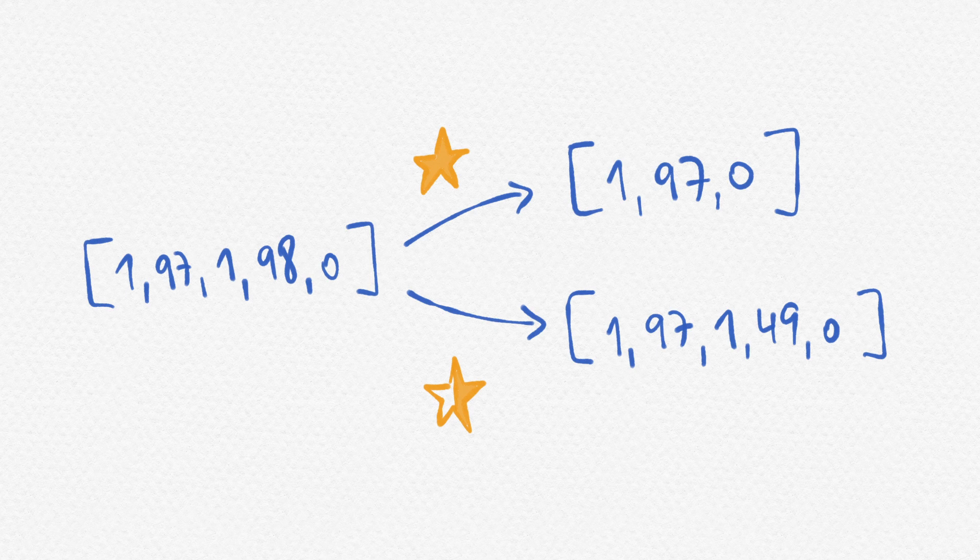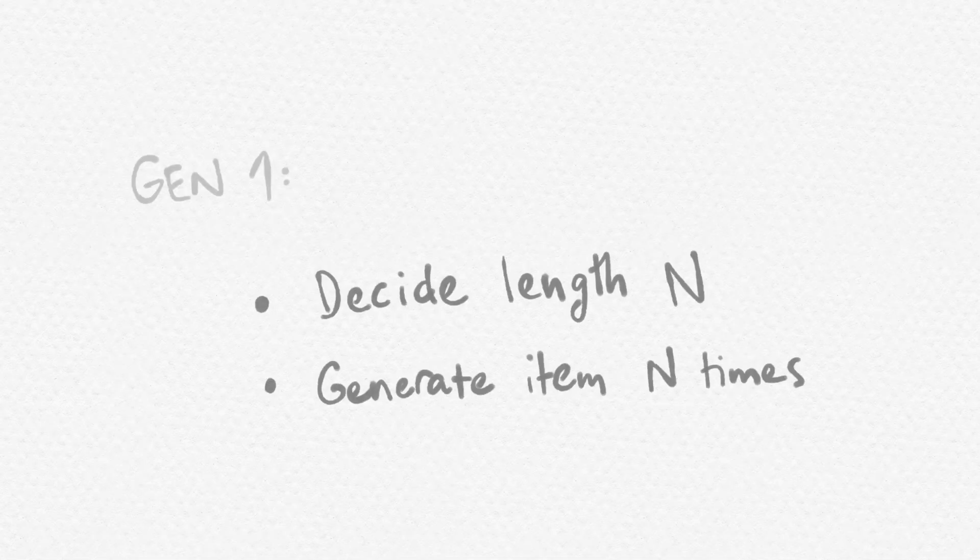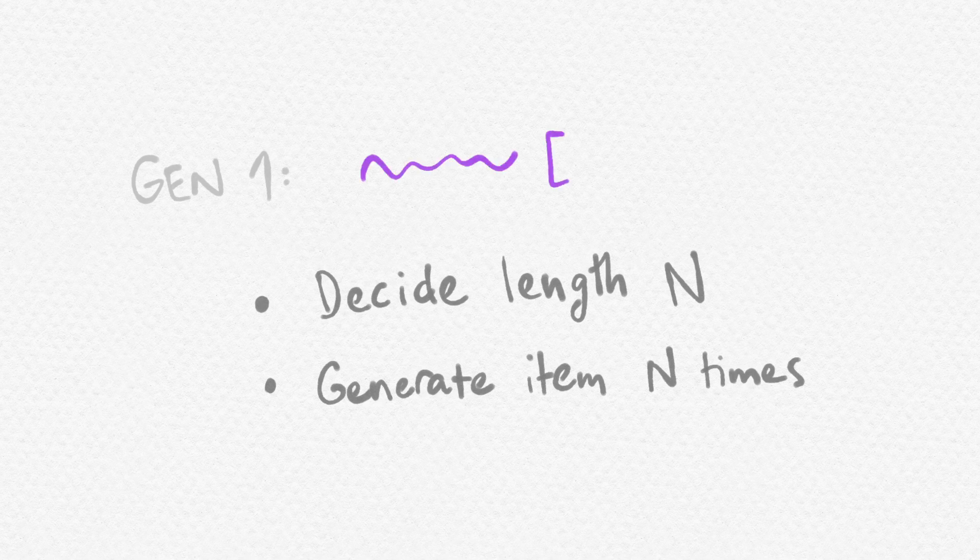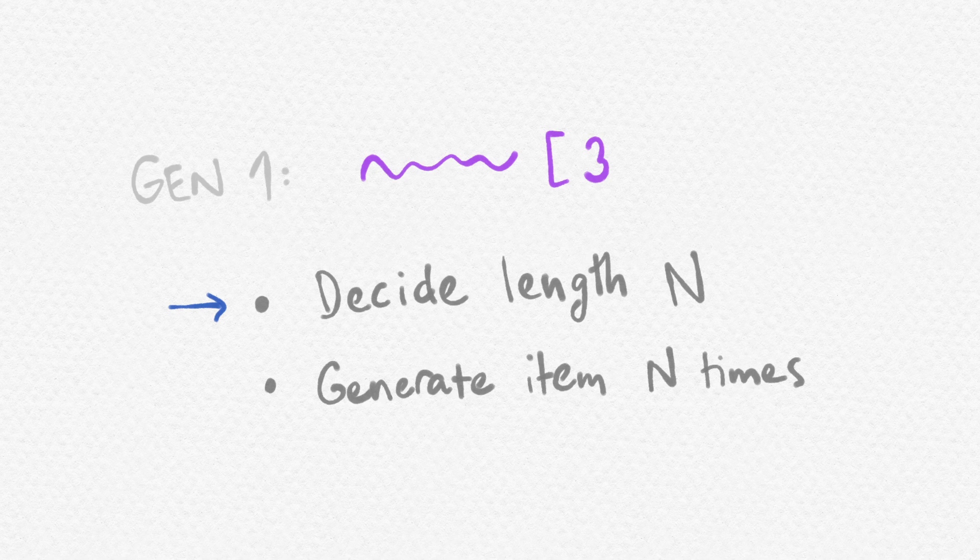This means though that the shrinking process is sensitive to how the generators will be written. If a generator for a list first draws a number to find out the length of the list, and then calls the item generator that number of times, well, that's gonna leave one number at the beginning of the PRNG history and then a few smaller PRNG runs after that.